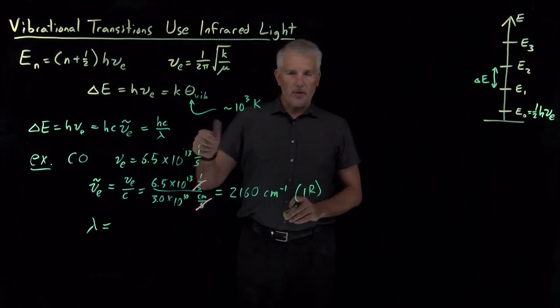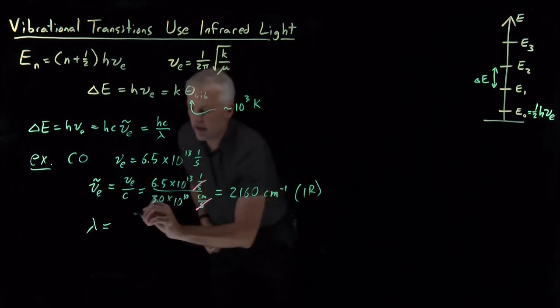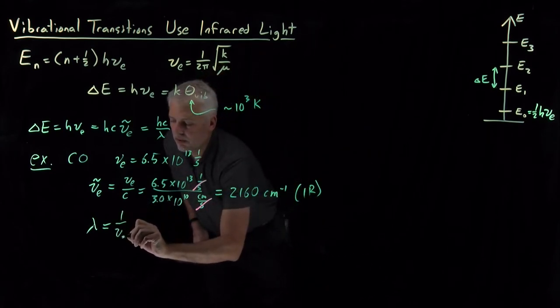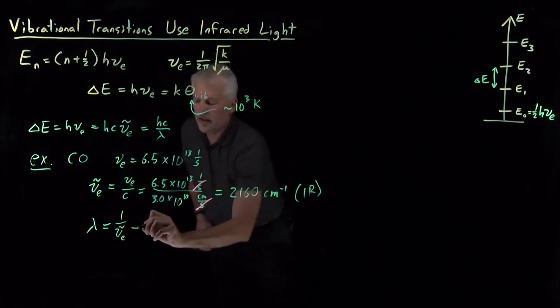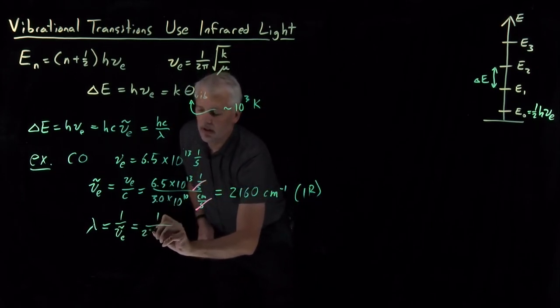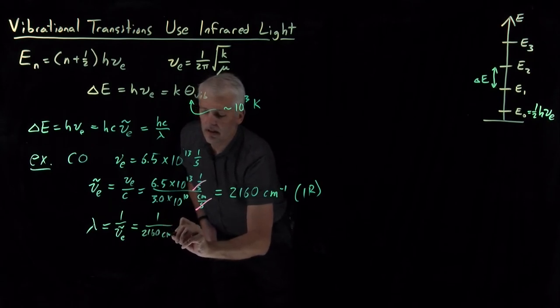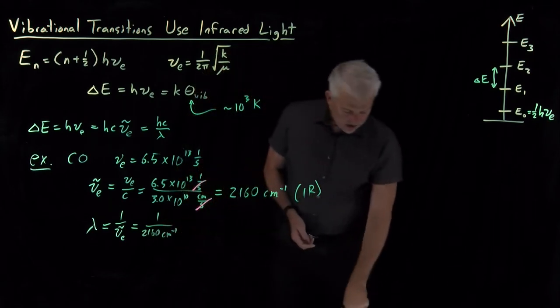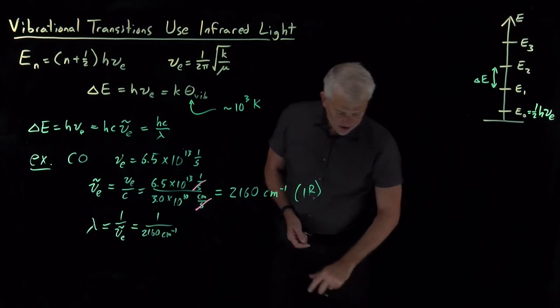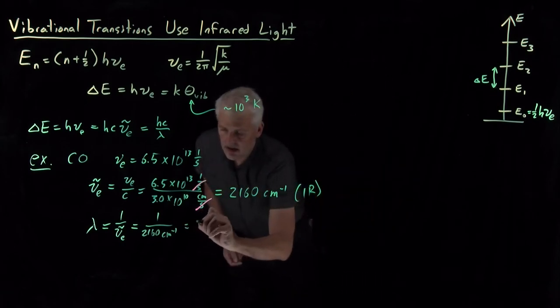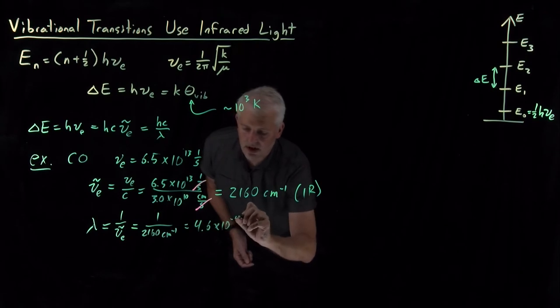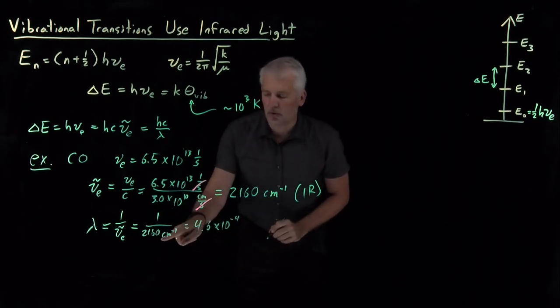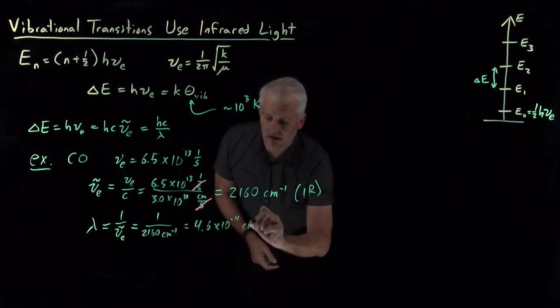So, if I already know nu tilde, I can just take 1 over that quantity to find the wavelength. So, that's 1 over 2160 inverse centimeters, which works out to be, in those units, 4.6 times 10 to the minus 4. If I invert 1 over centimeters, I get regular centimeters.